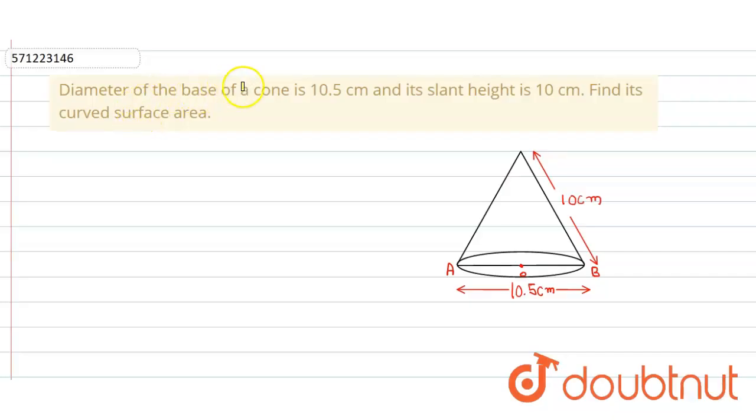In the given question, a cone is given with diameter of the base equal to 10.5 cm and slant height of 10 cm. We have to find the curved surface area of the cone.